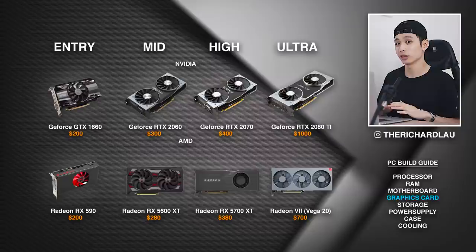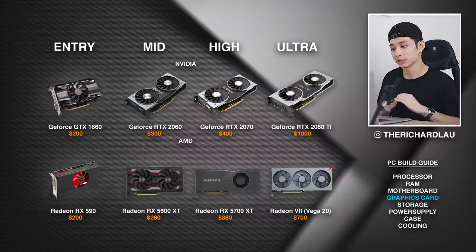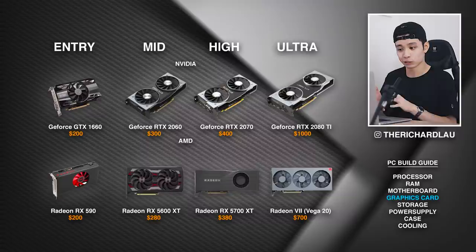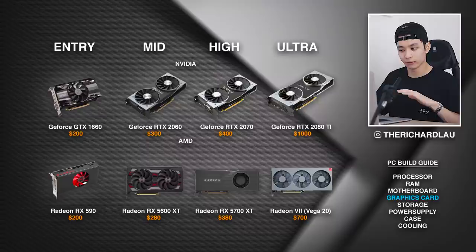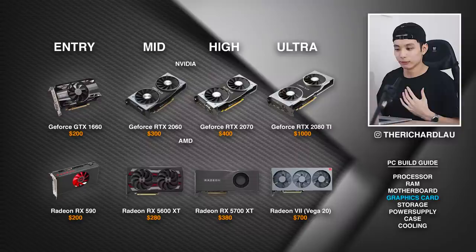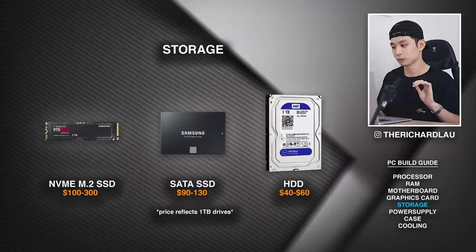Moving on to graphics cards — this is not as important as some people think. When it comes to gaming, obviously you want the best, but if you're strictly editing, the GPU only helps render previews and provides smoother playback. There are two main manufacturers: Nvidia and AMD, and there are also many companies that carry these cards like MSI and EVGA, but the card itself is the same. Entry-level graphics cards are pretty equivalent to the graphics cards built into MacBooks. If you're working with really big files, I recommend something higher tier. For 1080p and 4K YouTube content, a mid-level is more than enough. For the best bang for your buck, yet again I recommend the high tier.